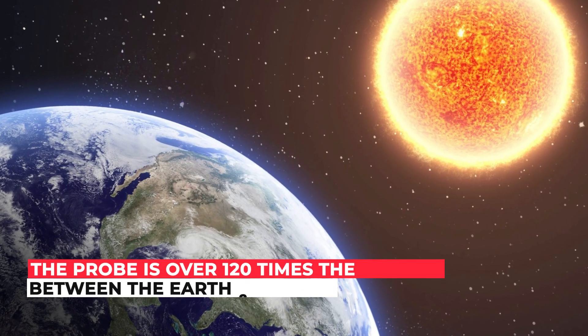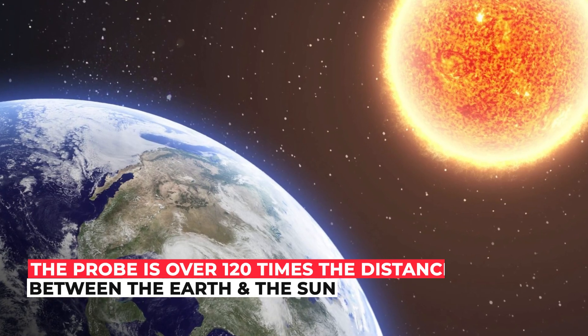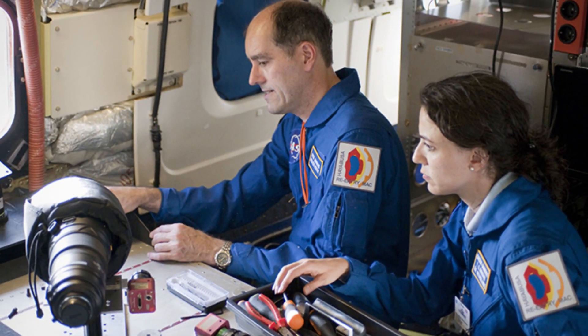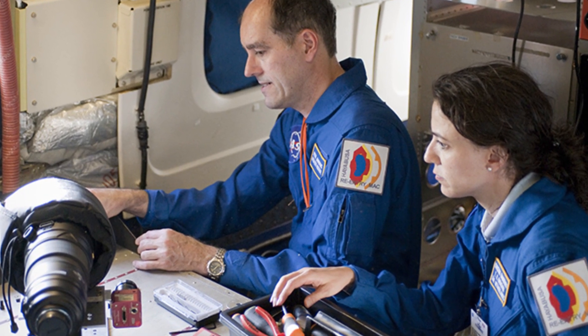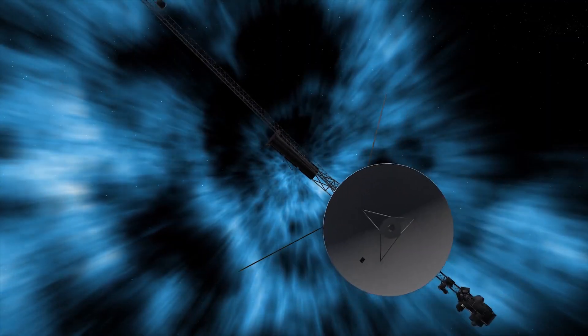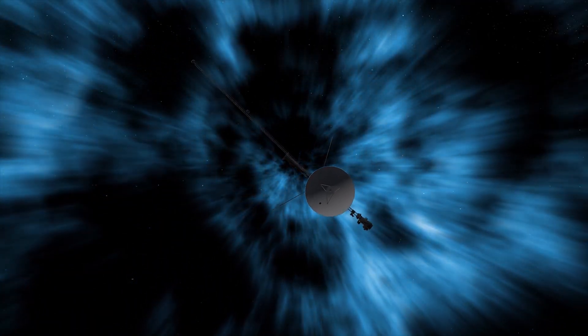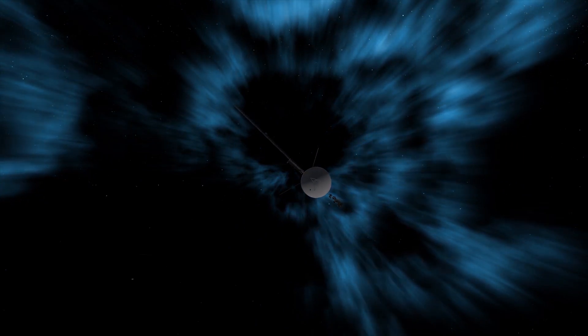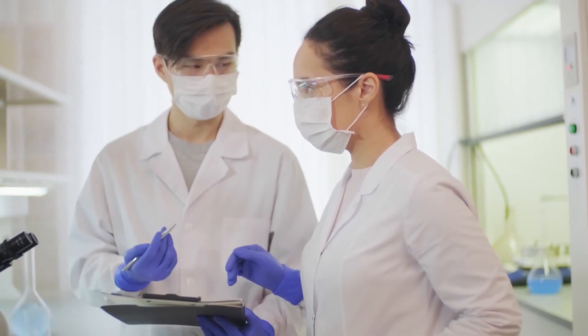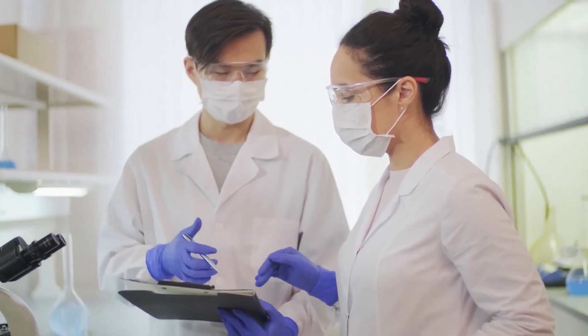Currently, the probe is over 120 times the distance between the Earth and the Sun. Initially, scientists predicted that Voyager's transition into this new realm, where effects from the rest of the galaxy become more pronounced, would be gradual and uninteresting. However, it was proven far more complicated than researchers had anticipated, with the spacecraft now encountering a strange region that scientists struggled to understand.